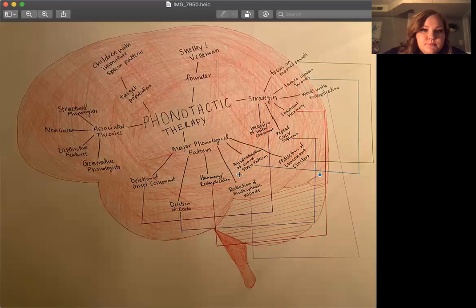Next we have the reduction or misproduction of word stress patterns. If we follow this up here, it says target iambic words. You would want to target the iambic words first, because if a child's going to omit a syllable, it's usually the weak syllable. Iambic words have a weak syllable and then the stressed syllable.